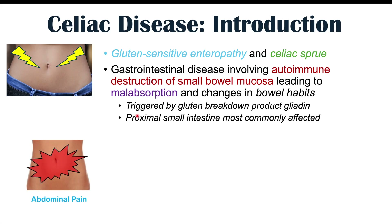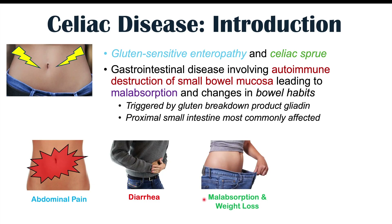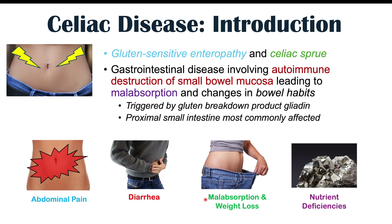Some of the more common symptoms of celiac disease include abdominal pain, generally associated with diarrhea, changes in bowel habits, and malabsorption leading to weight loss and nutrient deficiencies. Because the proximal small intestine is most affected, we get specific nutrient deficiencies such as iron, folate, calcium, and others. We'll discuss how these relate to changes in the nails.